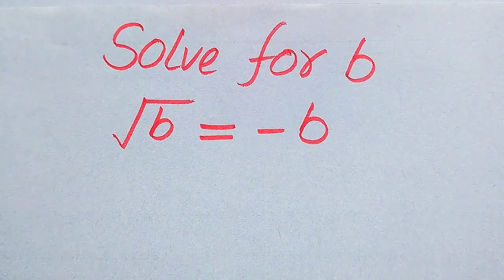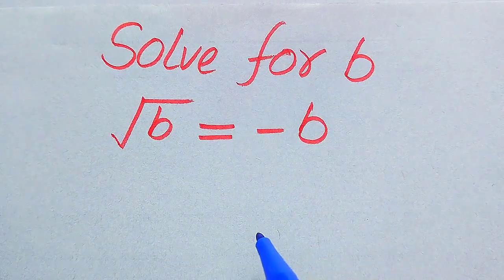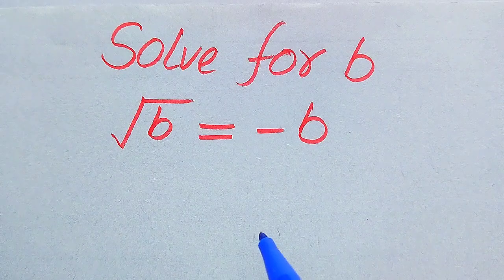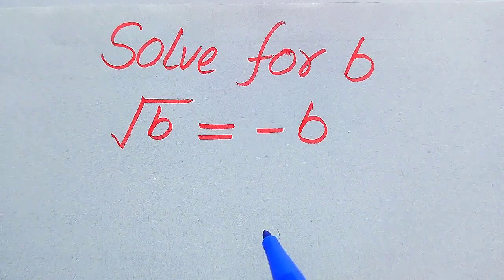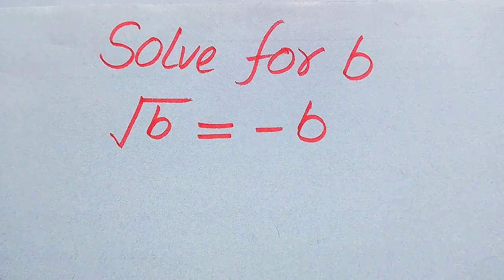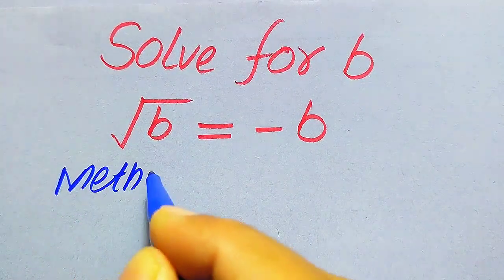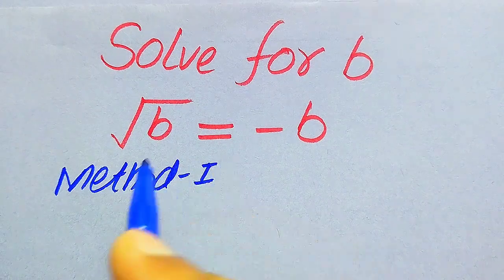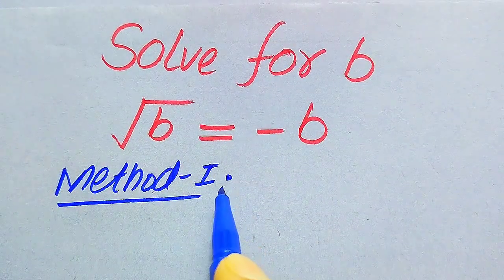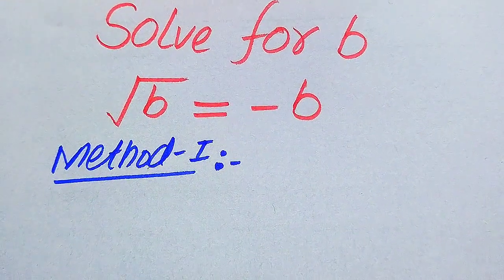Hello everyone. We will solve this problem: find all values of b if the square root of b equals minus b. We need to first find all the roots of this equation, and at the end we will verify which roots are solutions and which are extraneous roots. We will solve this problem using two methods, and if you have any other method in mind, please write it in the comment section.